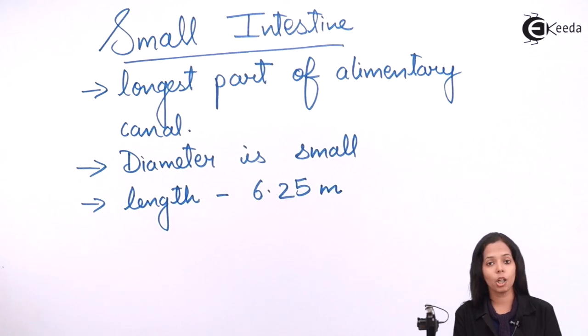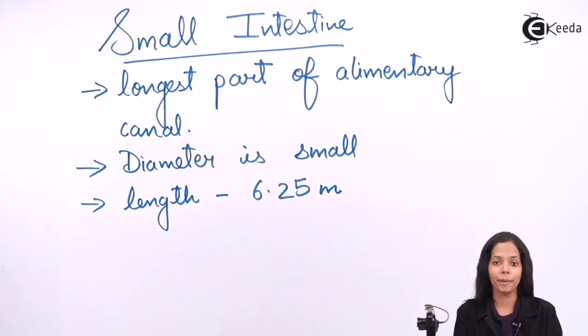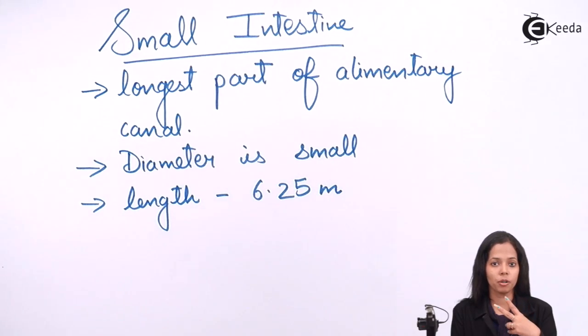Generally in the exam they ask you why small intestine, being the longest part, is called small intestine. The answer is related to diameter - the diameter of small intestine is less compared to large intestine. Speaking about its parts, small intestine is divided into three parts: duodenum, jejunum, and ileum.